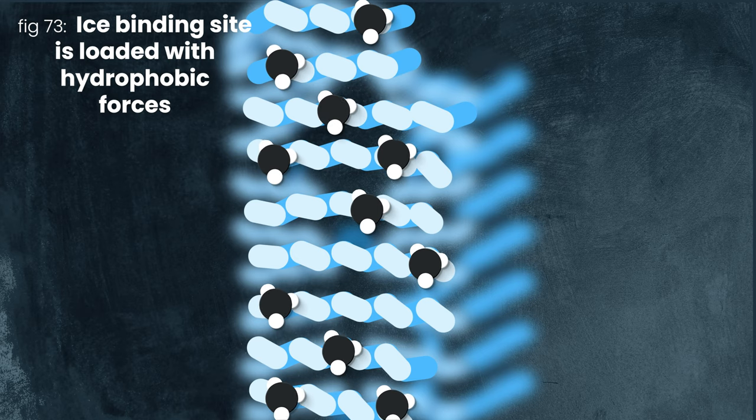Now, this isn't the case for every single ice structuring protein, just the one I'm showing you, but this particular one is made up of a bunch of alanine amino acids, with the alanine functional group sticking out. Now it gets goofy, because alanine is a hydrophobic amino acid, hydrophobic in the same way oil is. Anything with enough alanine on it will actively repel water.